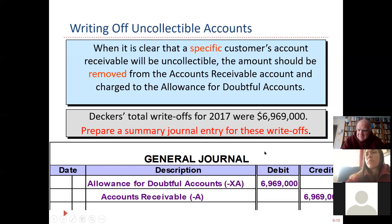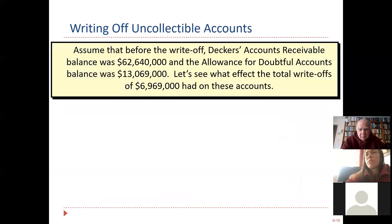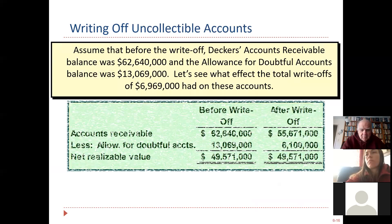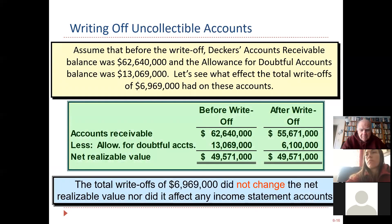The write-off is always a debit to allowance for doubtful accounts and a credit to accounts receivable. Think of the allowance as an allowance mom might give you as a kid — it's an allowance the company sets up, but you can only spend it on reducing accounts receivable.